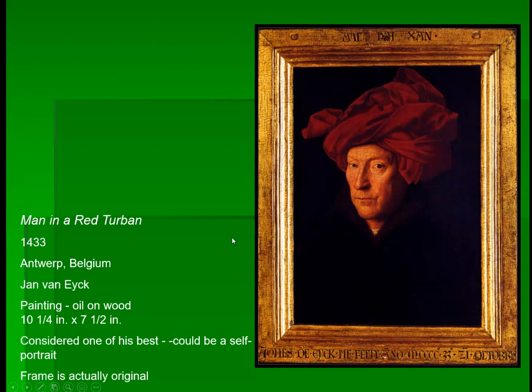Probably the most famous portrait painter — what really becomes popular in the Northern Renaissance, more so than in the Italian Renaissance, is portrait painting: paintings of famous people, rich people, and quite often the first self-portraits of the artist. The Renaissance is all about the individual. For example, 'Man in a Red Turban' is most likely a self-portrait of Jan van Eyck, based on other drawings of him, although it's just called Man in the Red Turban.